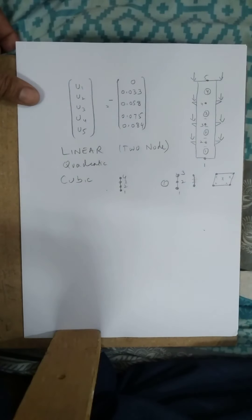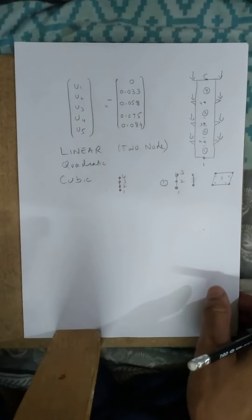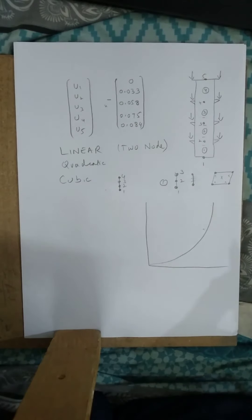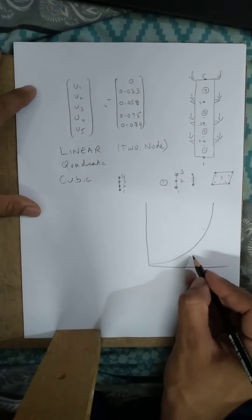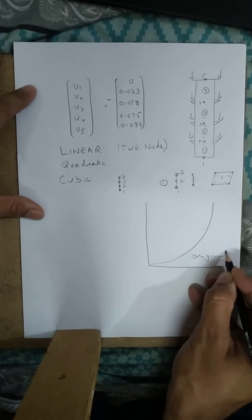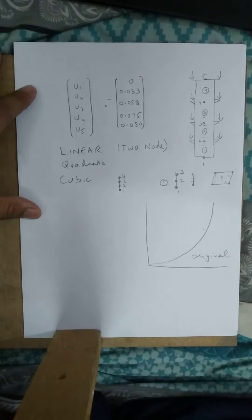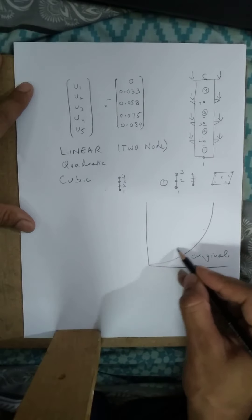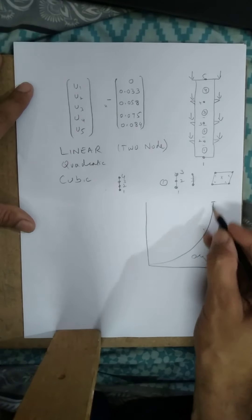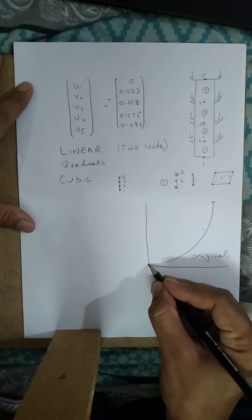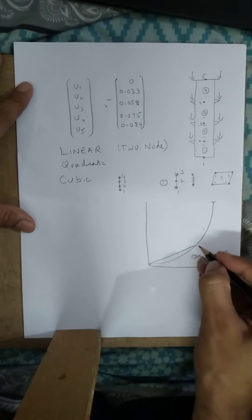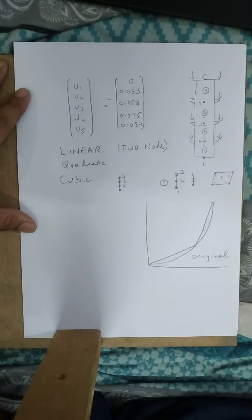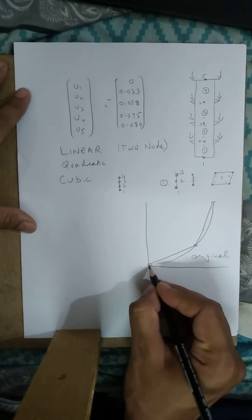In the body we have strain gauges giving the original deformation. We also have theoretical deformation from our finite element model. For example, if we take a total structure and divide it into three elements — element one, element two — these are linear elements.